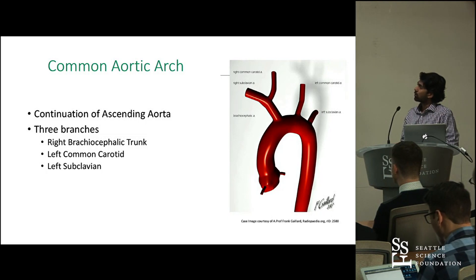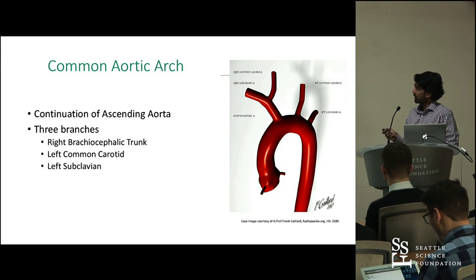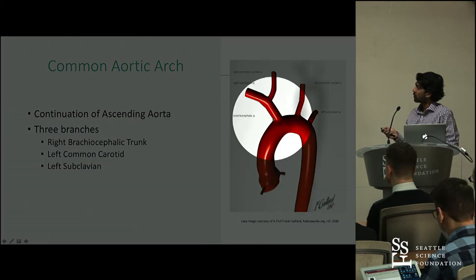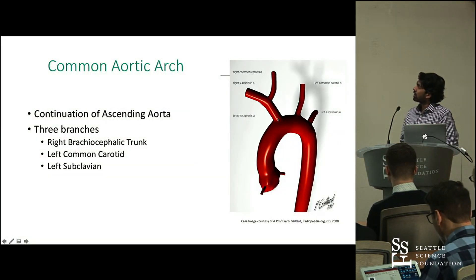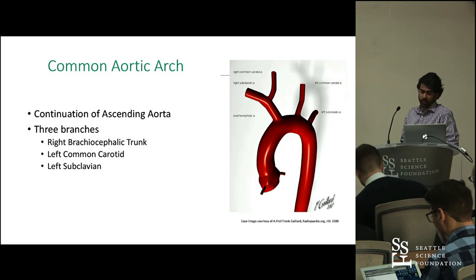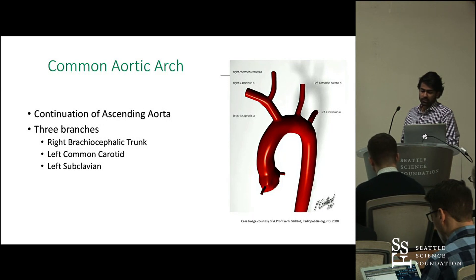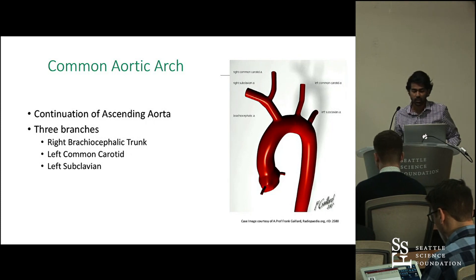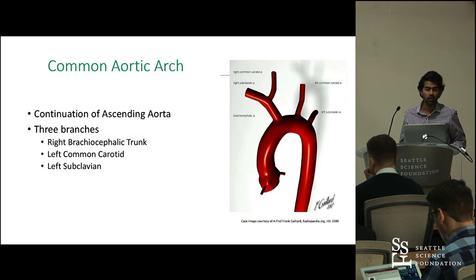Here we have the common aortic arch. You can see that it's a continuation of the ascending aorta from the left ventricle, where it branches first into a brachiocephalic artery on the right, which further bifurcates into the subclavian artery and the right common carotid. Then you have the left common carotid artery and a left subclavian artery. According to the Bergman Atlas, this normal variation is present in 80% of the population, which is why it's widely accepted as the common variant.